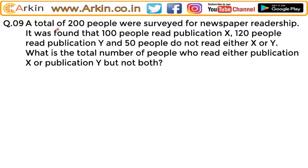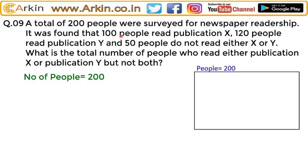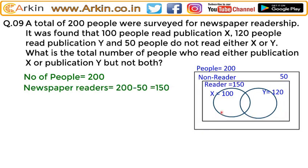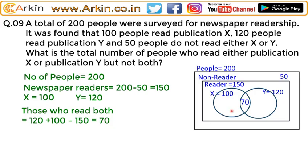A total of 200 people were surveyed for newspaper reading. It was found that 100 people read publication X, 120 people read publication Y, and there are 50 people who are not reading any newspaper. So the newspaper readers are only 200 minus 50 = 150. To find out those people who are reading both newspapers: 120 plus 100 minus 150 = 70 people are reading both newspapers.